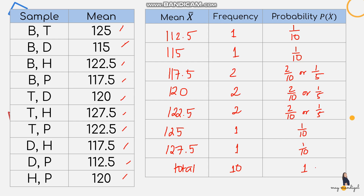That is how we create the sampling distribution of the sample means — we identified all possible means of all possible samples from the population, and we can identify the probability of getting a particular mean. For example, what's the probability of getting a sample mean of 125? The answer is 1/10, or 0.1.